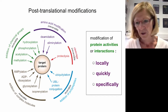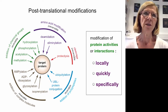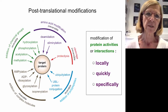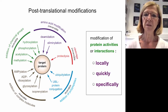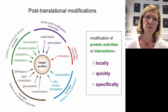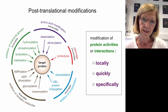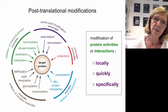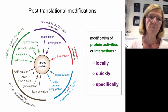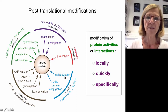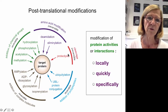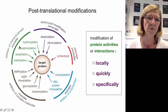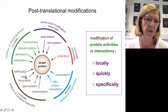Another aspect of our research deals with post-translational modifications in the host. Modification of protein activities by post-translational modification can occur locally, quickly, and specifically. There are different types: reversible modifications such as phosphorylation, acetylation, methylation, and SUMOylation; and irreversible modifications such as proteolysis, deamidation, or elimination.